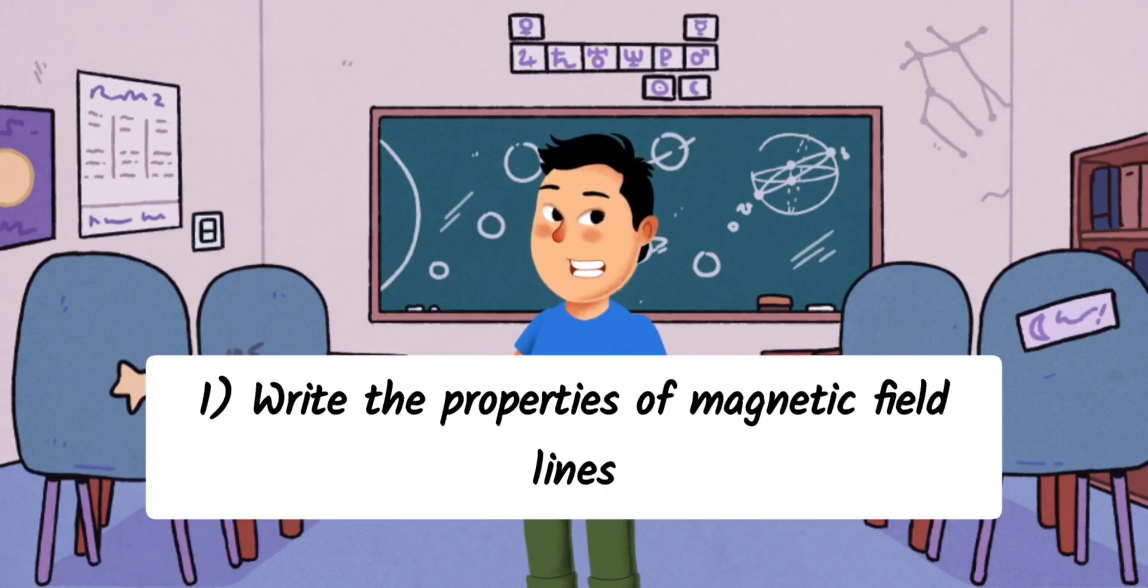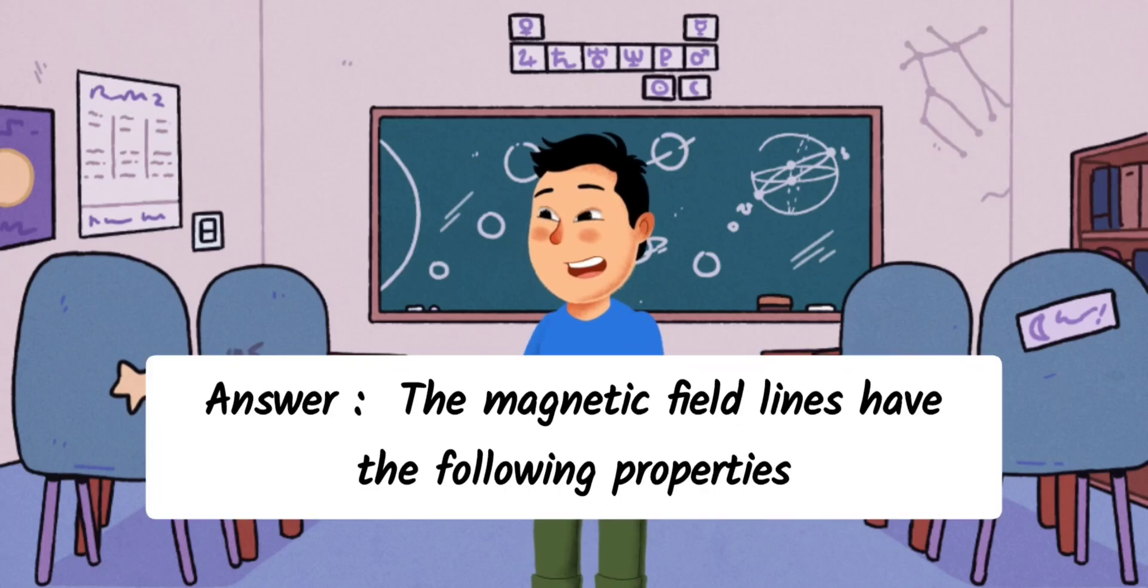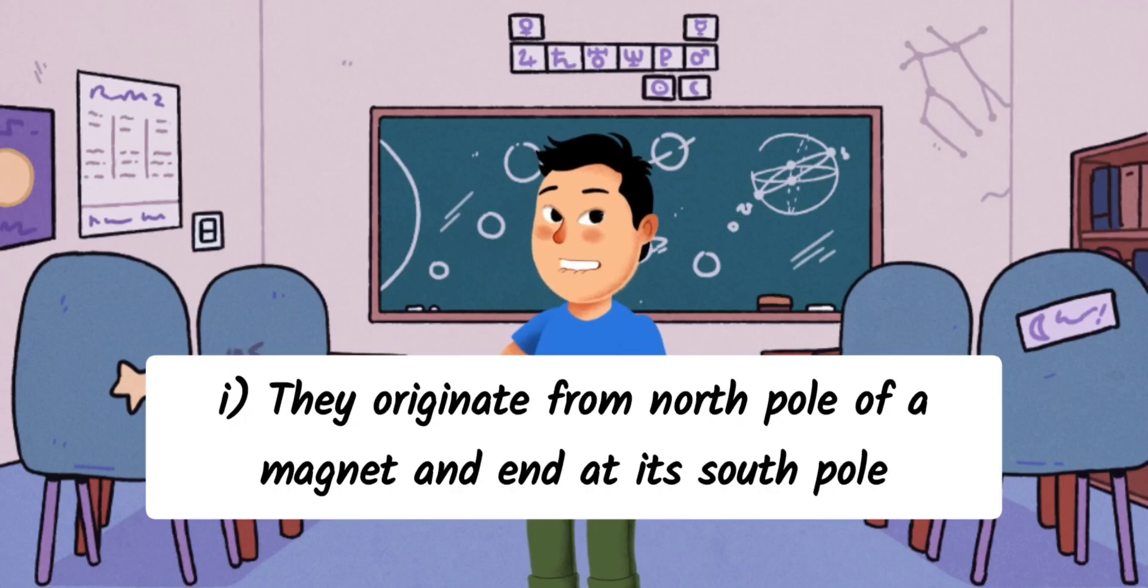Question 1: Write the properties of magnetic field lines. Answer: The magnetic field lines have the following properties. They originate from the north pole of a magnet and end at its south pole.